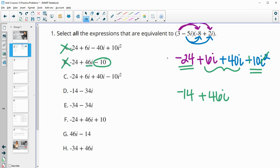This next one, negative 24 plus 6i is good. Plus 40i is good. And then minus 10i squared is what we had before we simplified that i squared. So this one is good.